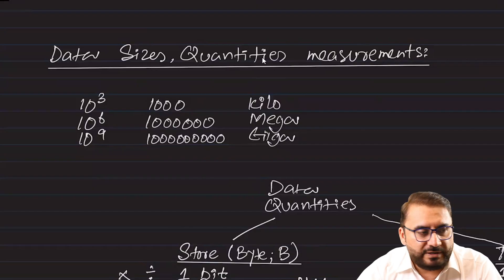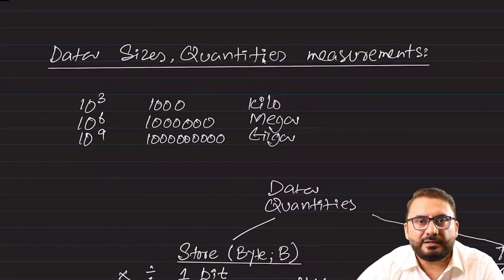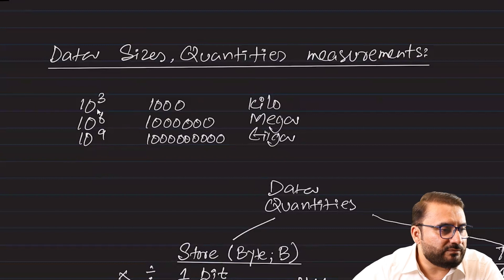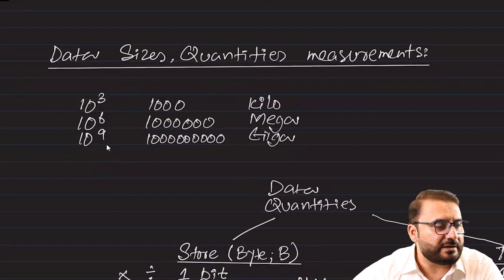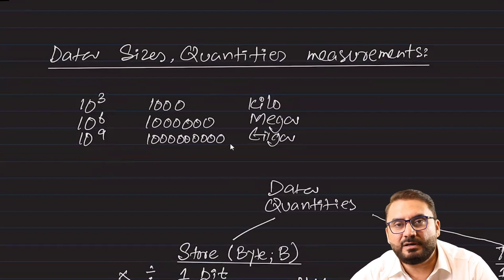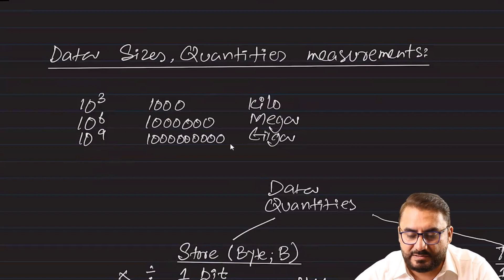The base of all these quantities is Base 10. Until 1998 this was all right, but after that a new system came — instead of SI, that is called IEC: International Electro-Technical Commission. It gave base-2 prefixes.